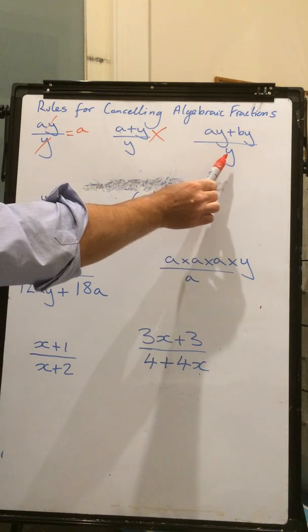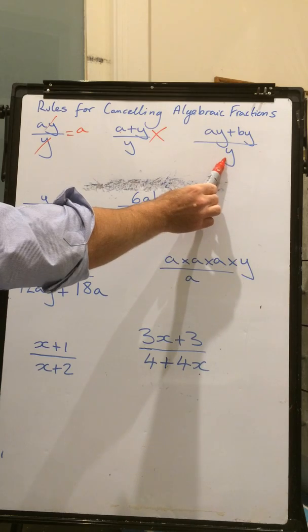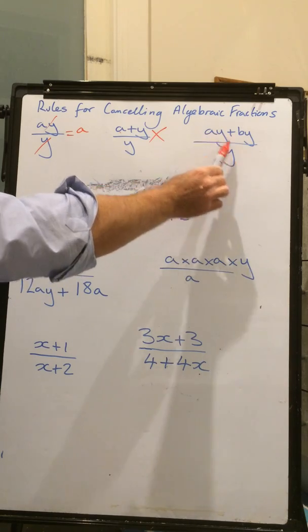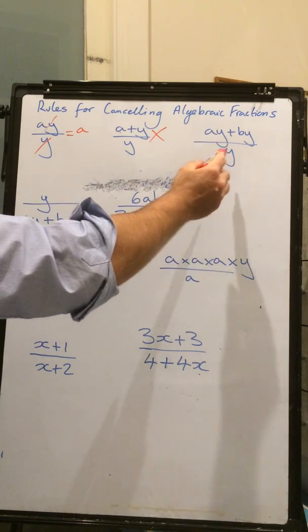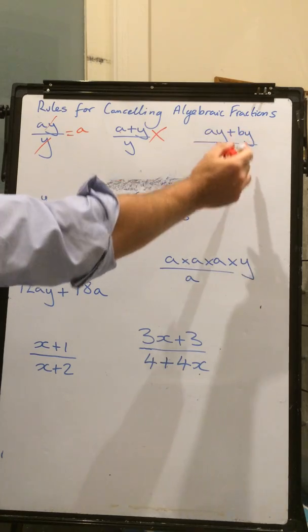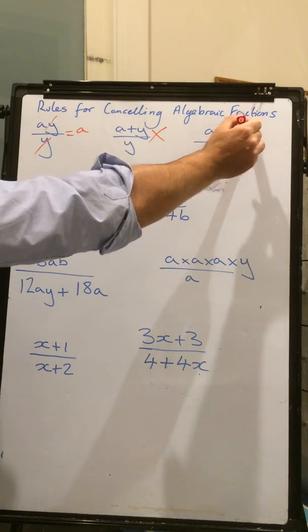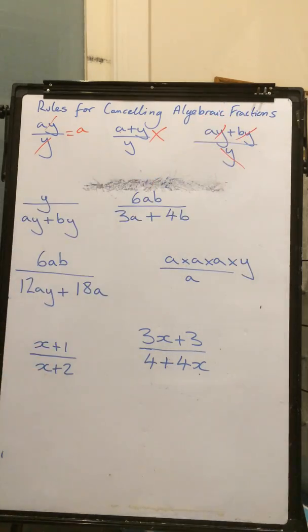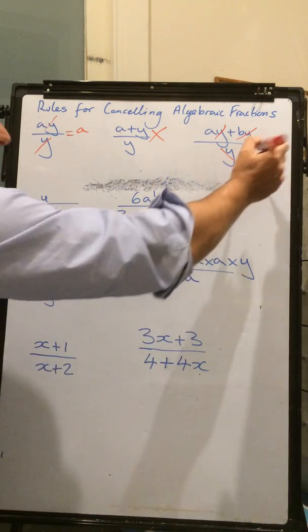However, in this case here, this y here in the denominator can actually cancel out both the y's in the numerator here. So, this y can cancel out both of these here. So, we're going to finish off with, in this case, a plus b.